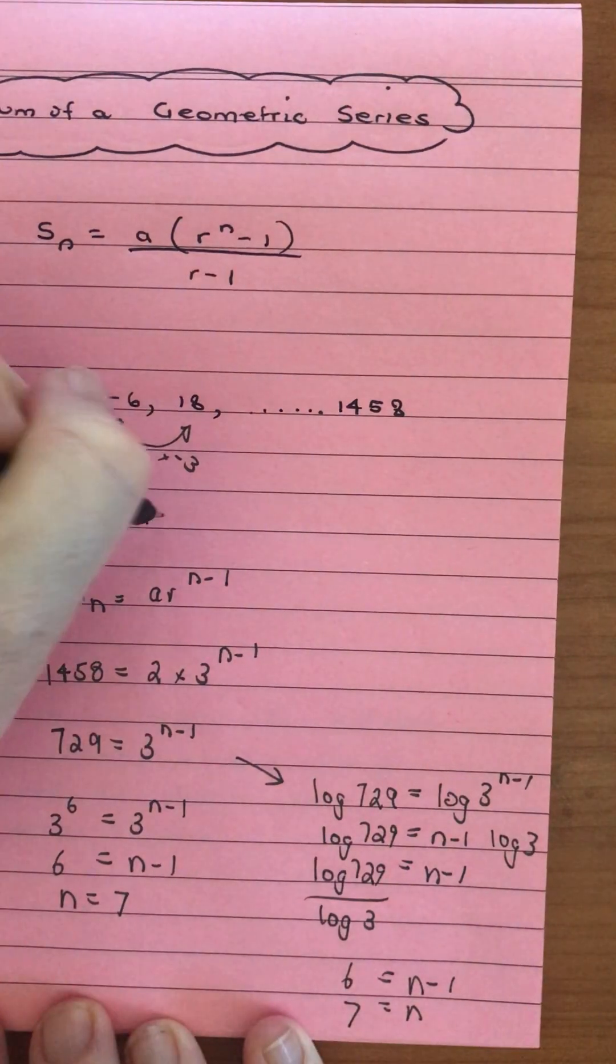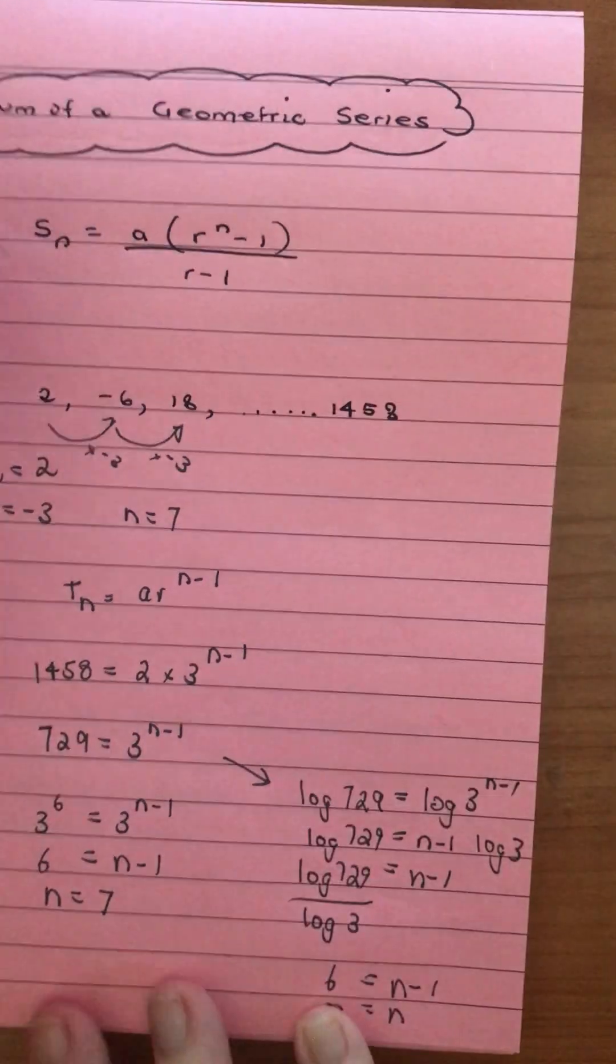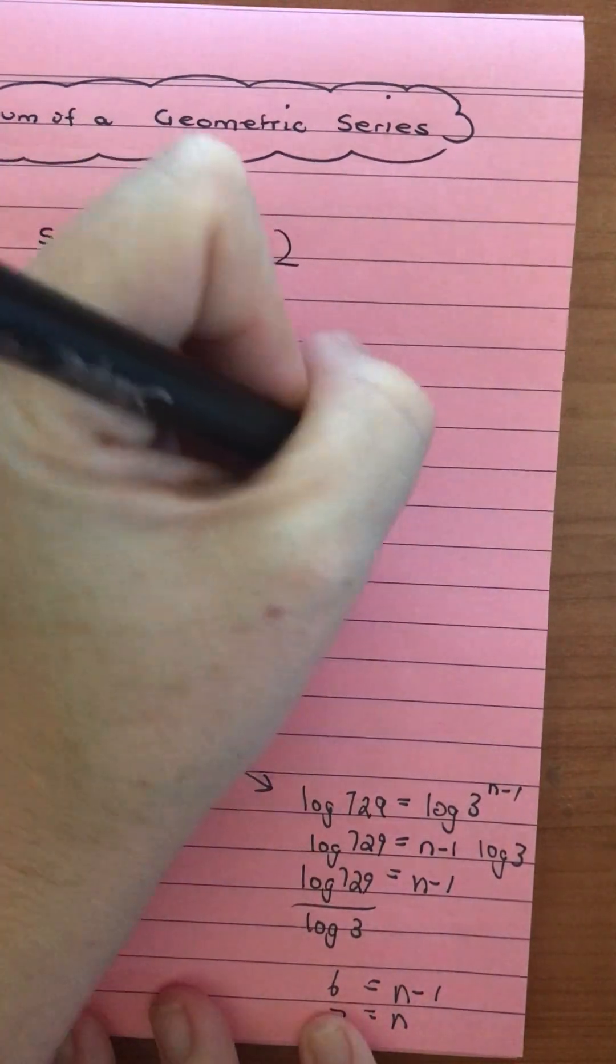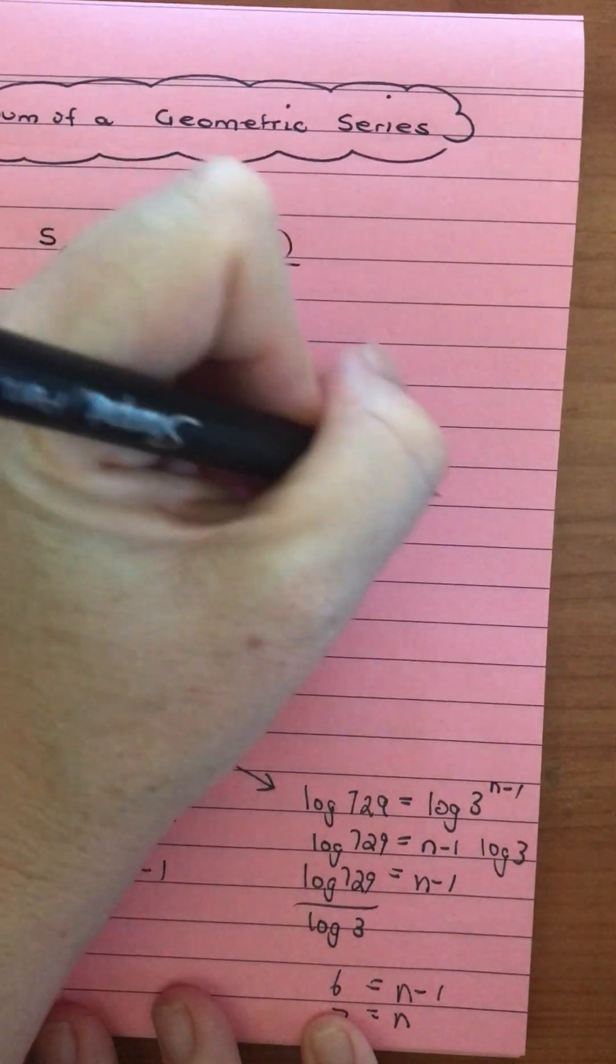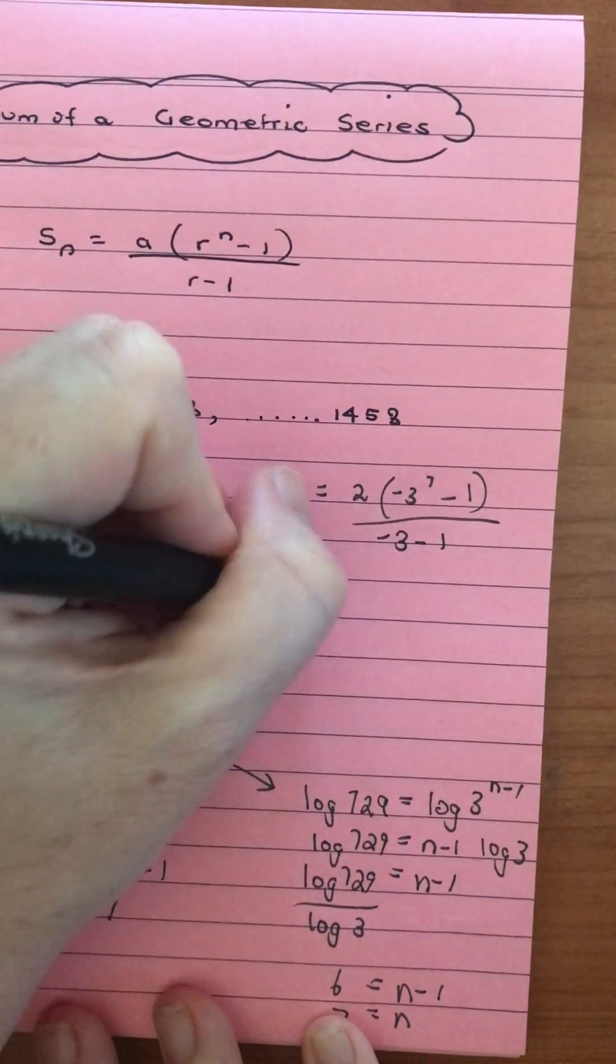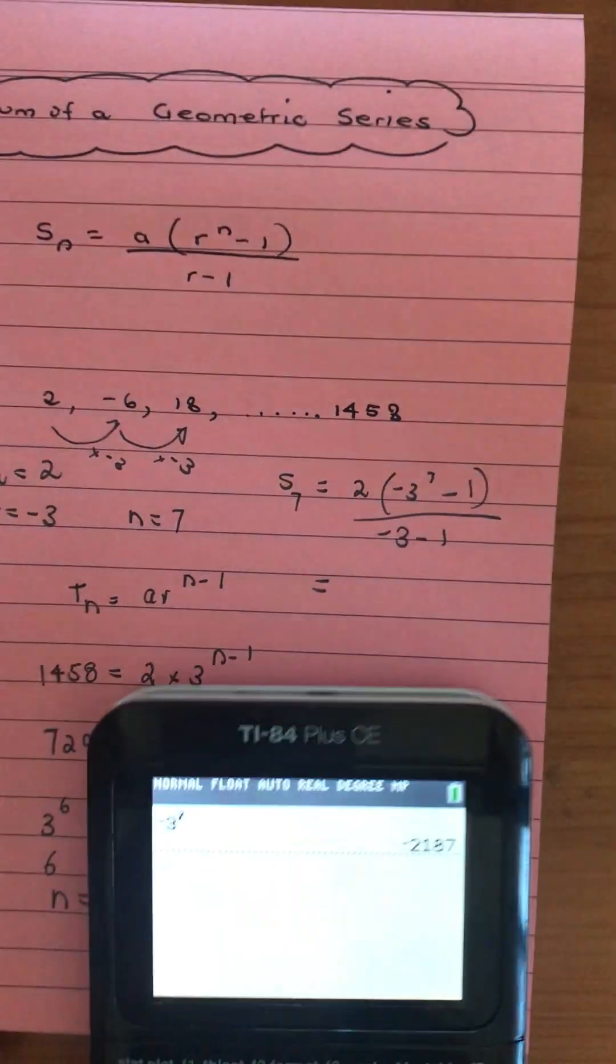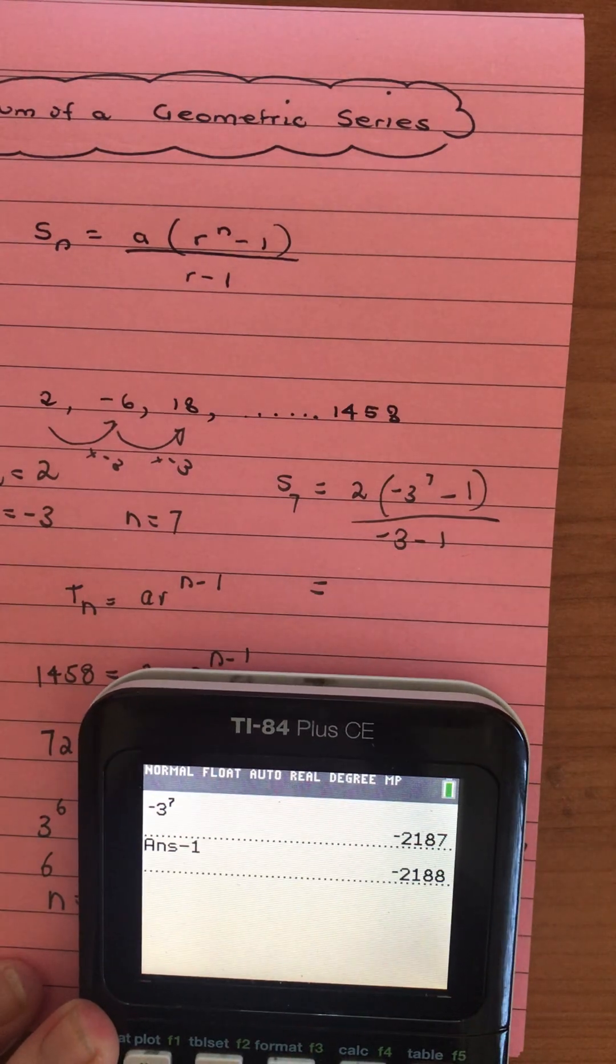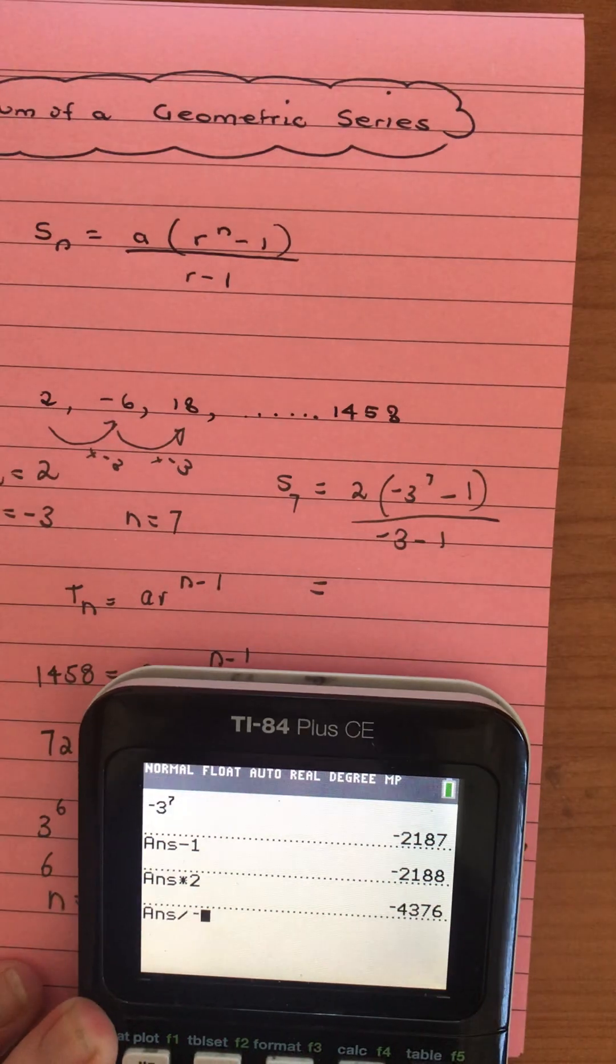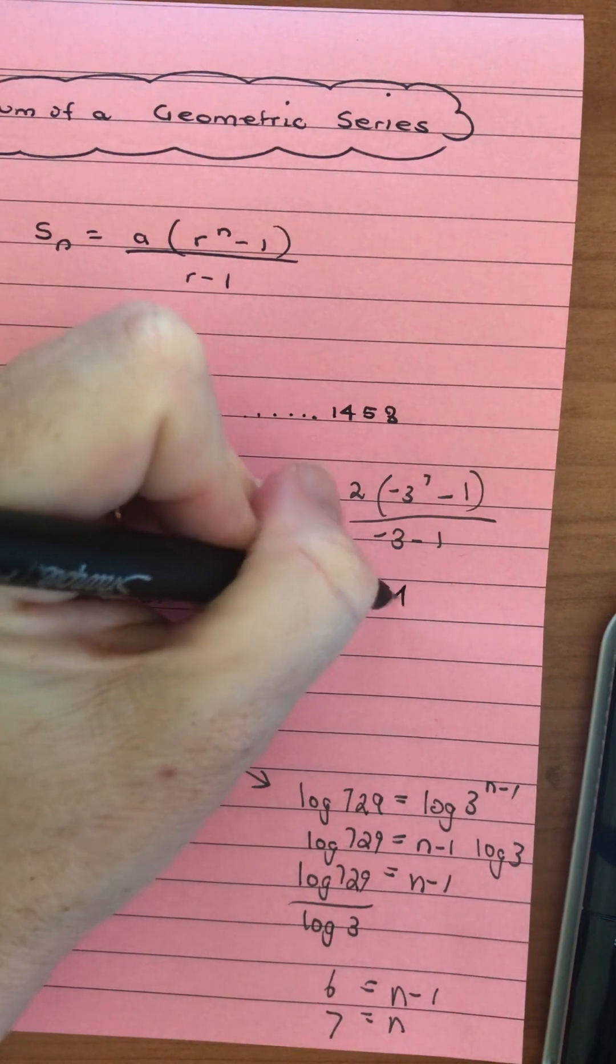Now that we have our n, we can then use our rule up here of S_n is equal to 2(-3^7 - 1)/(-3 - 1). So we can pop that in: -3^7 is going to be -2187 - 1, and we're multiplying that by 2, and then we're dividing that by -4. So we get 1094 as our answer.